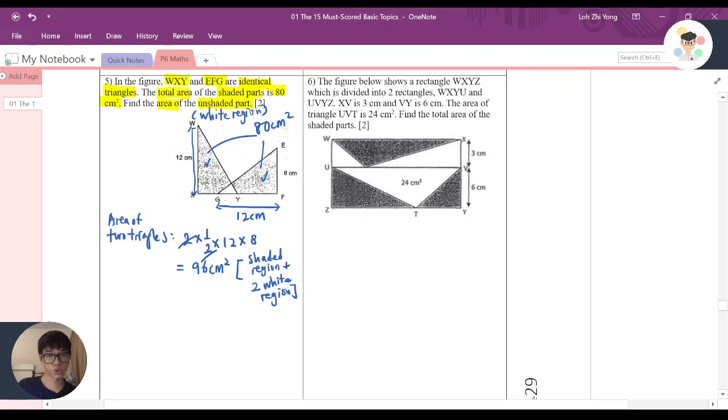Now, to look for the two white regions, we just use 96 minus 80. Because 80 is the shaded part, if we minus it away, what is left is the two white regions, which is 16.